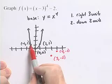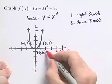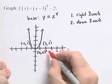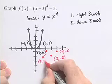Take the point negative 1, 1. Go right 3 units, 1, 2, 3, down 2 units, and that point is 2, negative 1.